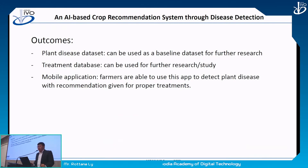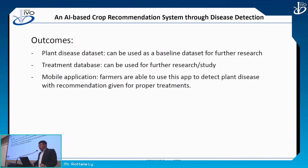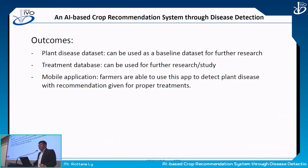The outcomes of our project are three. First, a plant disease dataset from field visit data collection, which can serve as a baseline dataset for further research in the agricultural sector, particularly for disease detection. Second, a treatment database collecting possible treatment methods for identified diseases, also useful for further research in the agricultural sector. Third, a mobile application enabling farmers to detect plant disease in their farm and receive recommendations for proper treatments to save their plants and increase crop production.